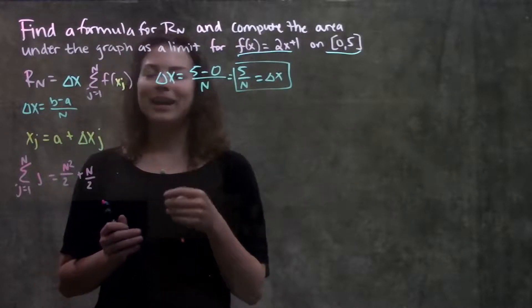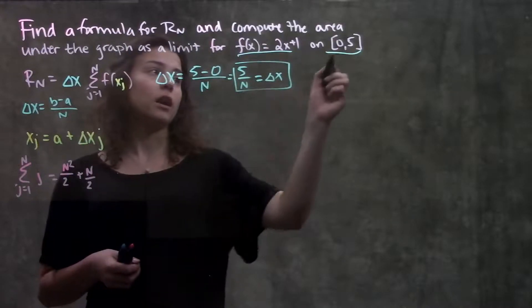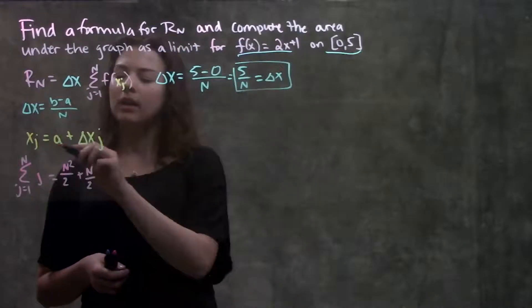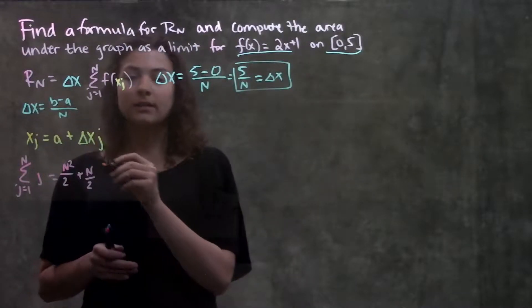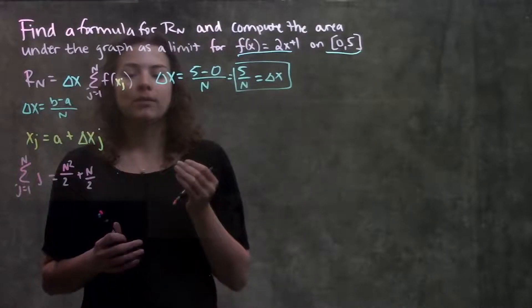Our a is just wherever we're starting, our first number on this interval, plus delta x, like we said, that's the width of each rectangle, times j. That's just whatever rectangle we're on.